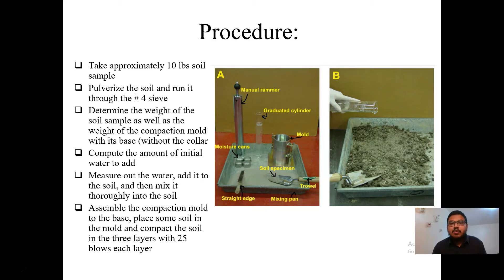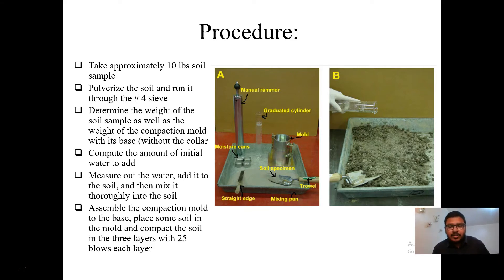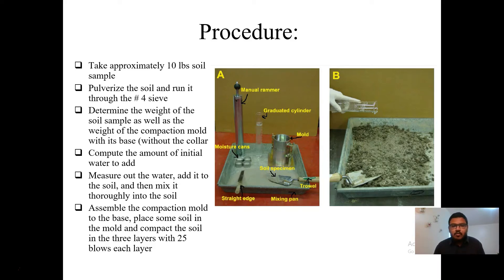For the standard Proctor test procedure, we first take a certain amount of soil — about 10 pounds — pulverize it, and run it through the number four sieve, collecting the portion that passes. We then measure the amount of water to be added. We perform different trials with different water contents, starting from 6% up to 24%, since the optimum moisture content of soil typically varies in this range.